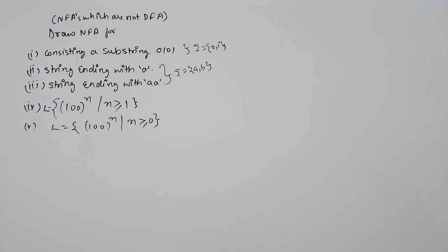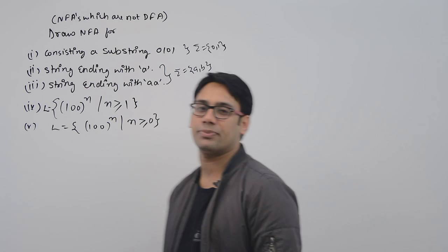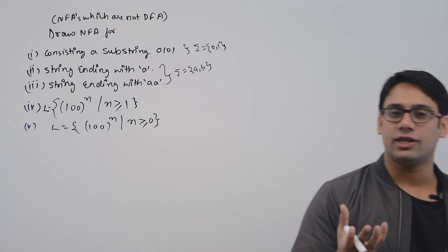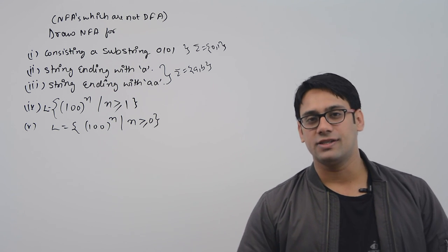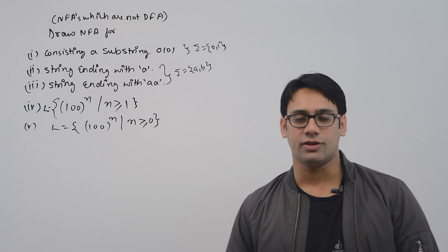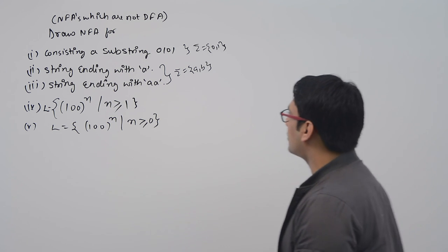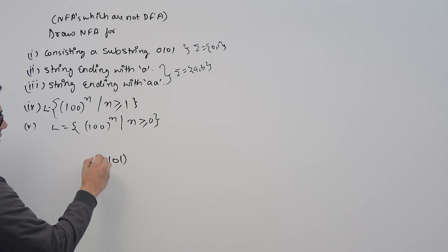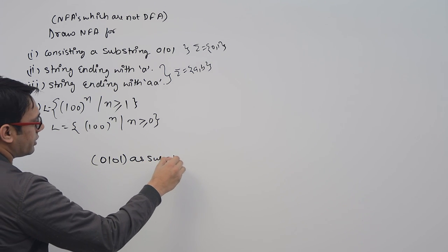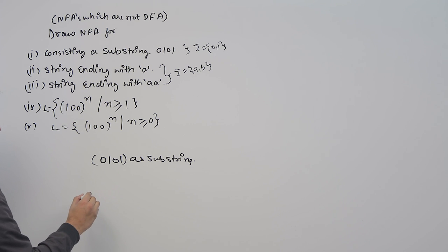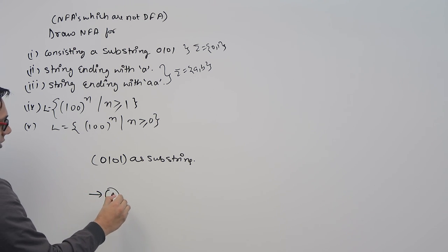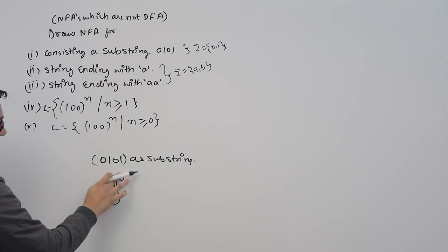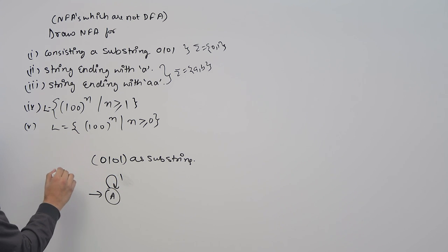The first one consists of a substring 0101. You can clearly draw a DFA. The better way to explain is: I will draw a DFA first, because every DFA is also an NFA, and then I'll draw an NFA which is not a DFA. So this is the initial state A. Starting, you can get any number of zeros or any number of ones — this part is a DFA.